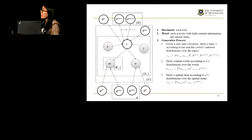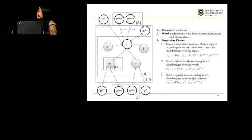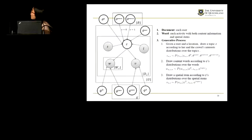This is the graph representation of the GeoSarge model. We treat each user as a document and each activity with both the spatial item and the content information as a word. In the generative process, we first draw a latent topic according to both the user's personal interest and the causal opinion. The background model is trying to make this learned model more discriminative, because it can assign high probabilities to some non-discriminative terms. Then we draw the content words and the spatial items according to the topic's distribution.